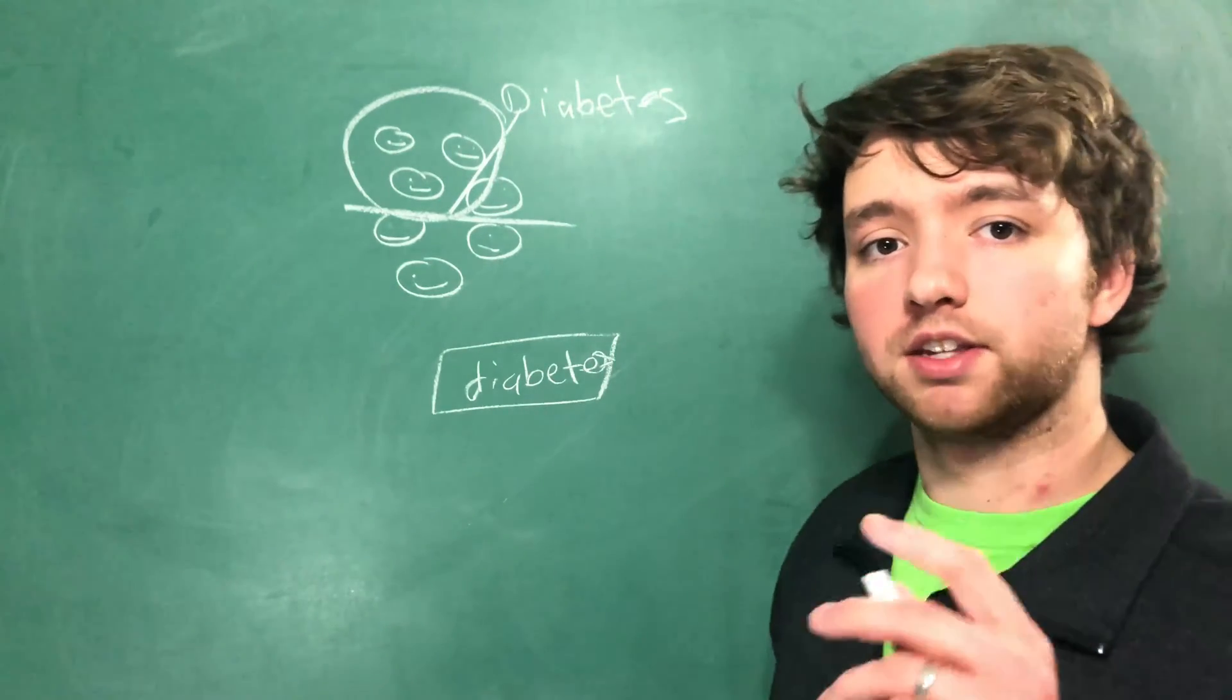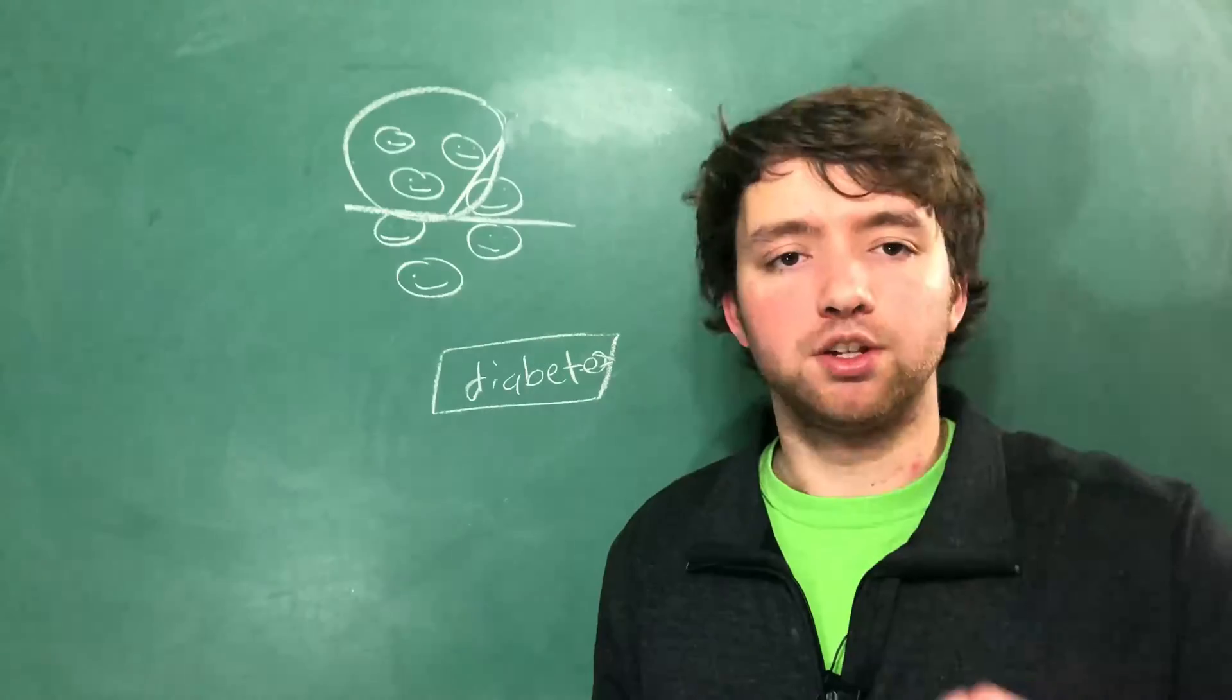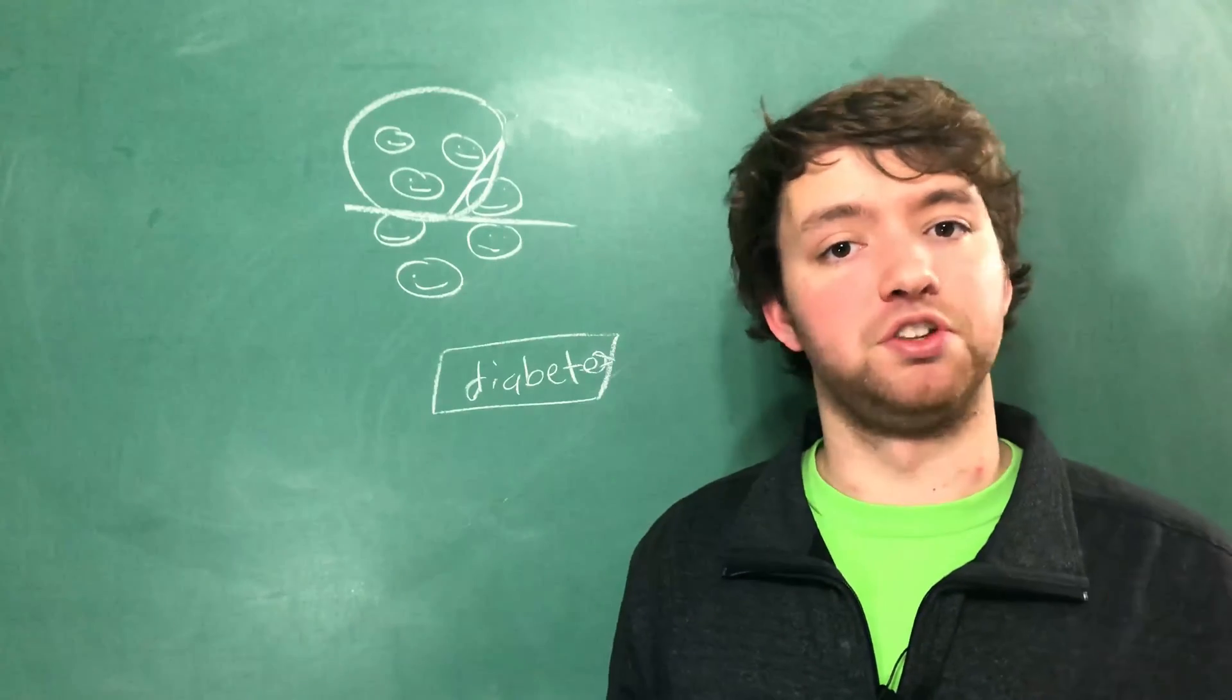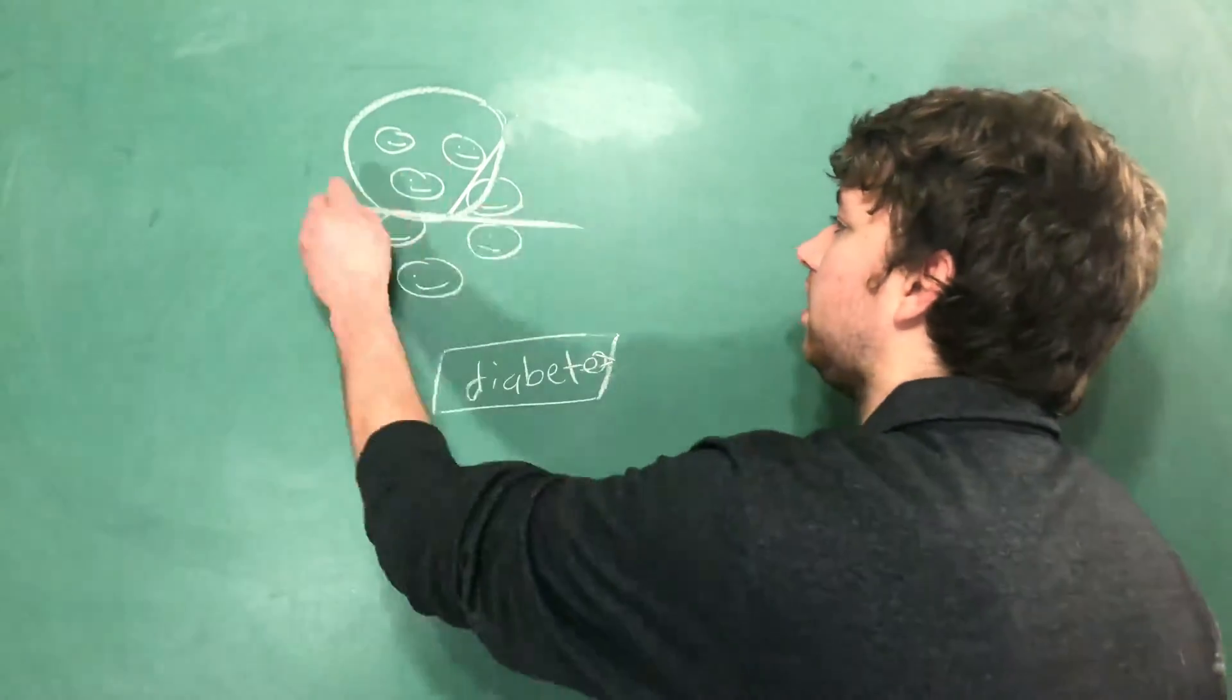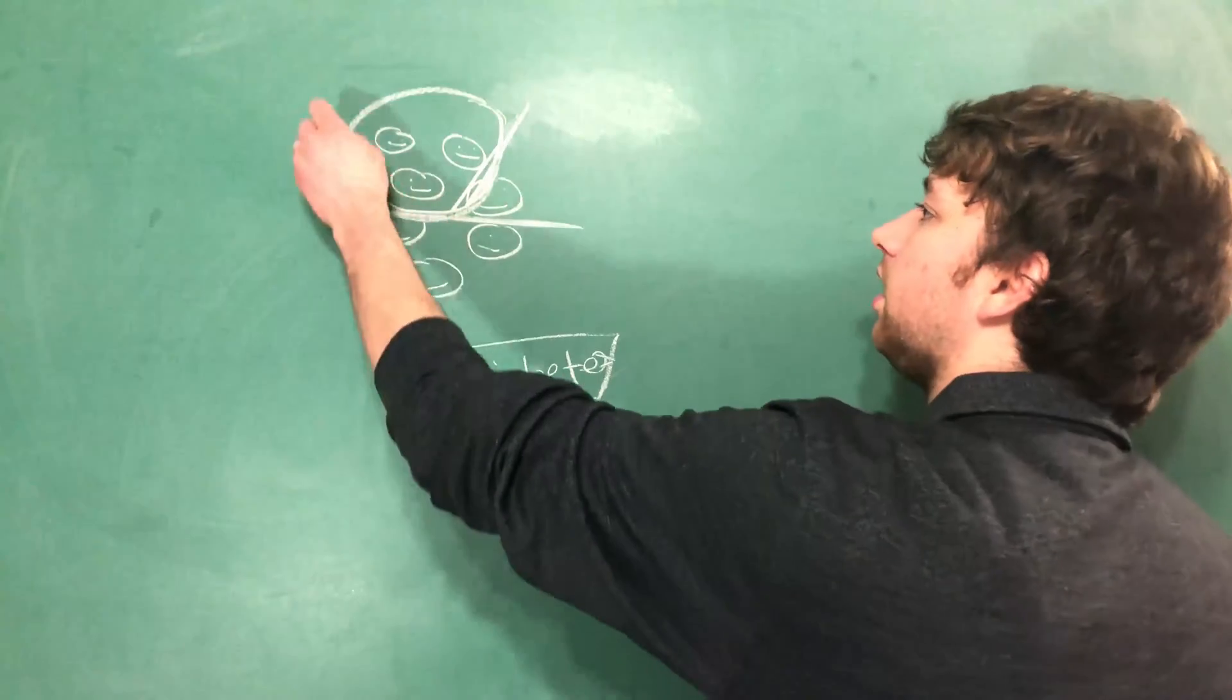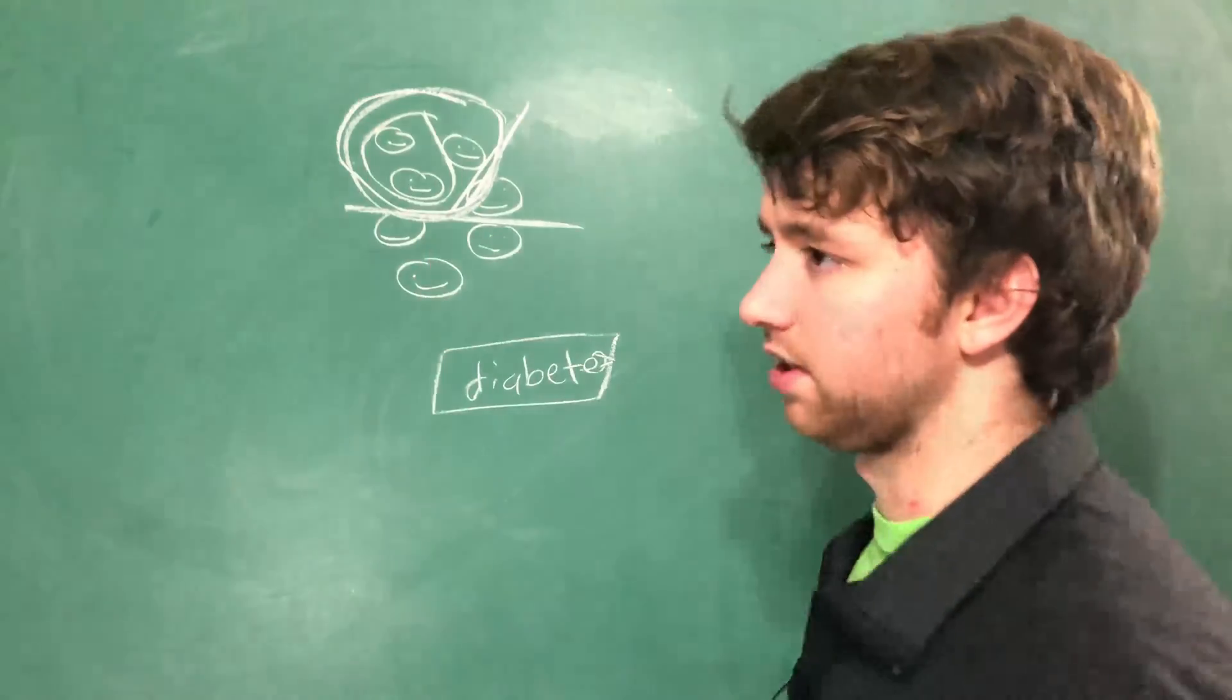The second base case is if we get down to the point where we're out of descriptive features. If you remember in the previous video, every time we split on a descriptive feature we would remove it from the available descriptive features list. Well what happens if we split our data and we split it again and keep doing that and we eventually end up with let's say three people?